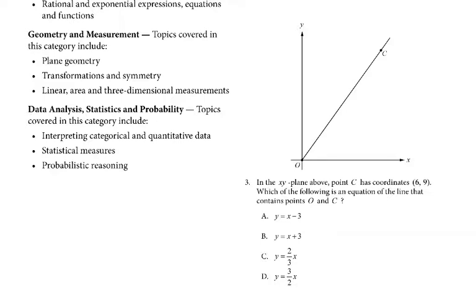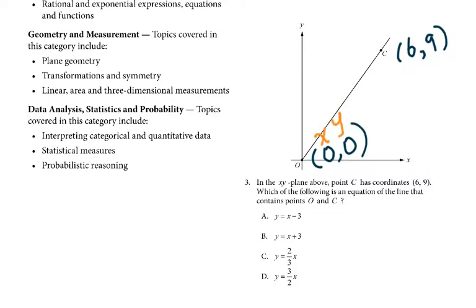For number 3, point C has coordinates (6, 9). Which of the following is an equation of the line that contains points O and C? Point O means (0, 0). For this kind of question, just plug in: when x equals 0, y must be 0; when x equals 6, y must be 9. After plugging in, you can see D is the answer.